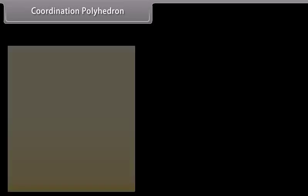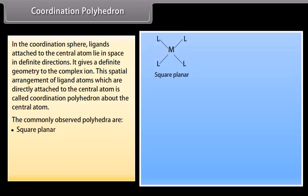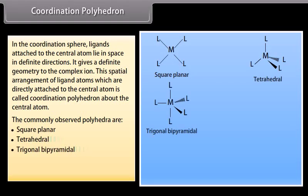Coordination Polyhedron: In the coordination sphere, ligands attached to the central atom lie in space in definite directions, giving a definite geometry to the complex ion. This spatial arrangement of ligand atoms directly attached to the central atom is called the coordination polyhedron. The commonly observed polyhedra are: square planar, tetrahedral, trigonal bipyramidal, square pyramidal, and octahedral. For example, square planar polyhedra are observed in [PtCl4]2−, tetrahedral in Ni(CO)4, and octahedral in [Co(NH3)6]3+.